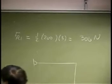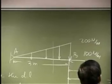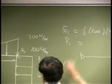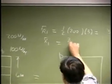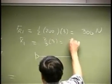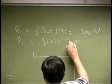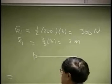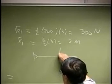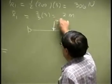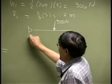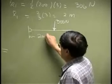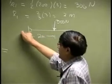It should act a third from here. If I call this X1 bar, that is going to be two-thirds of 3, or 2 meters. Your first force is a force of magnitude 300 Newtons acting at a distance of 2 meters from point A.